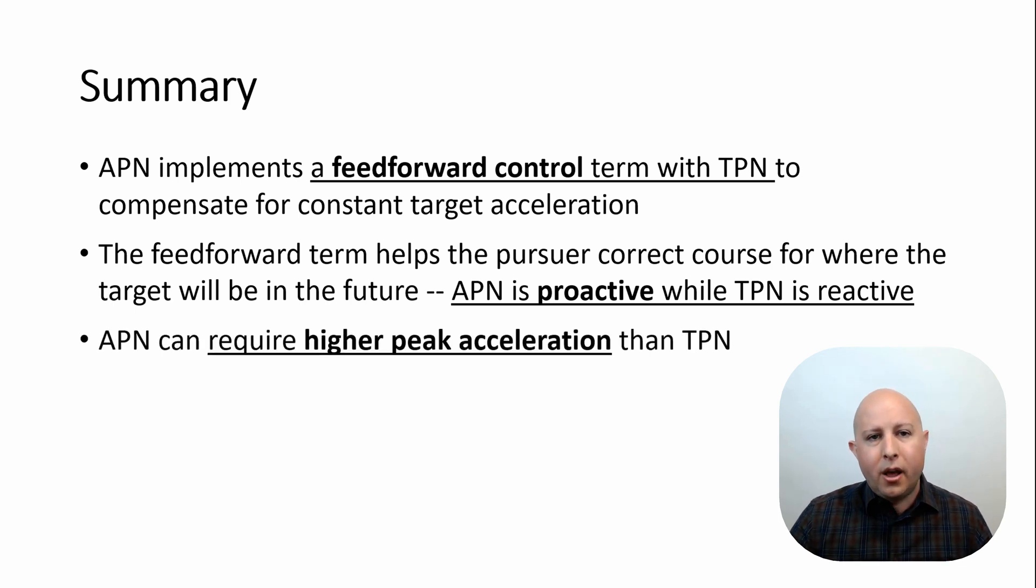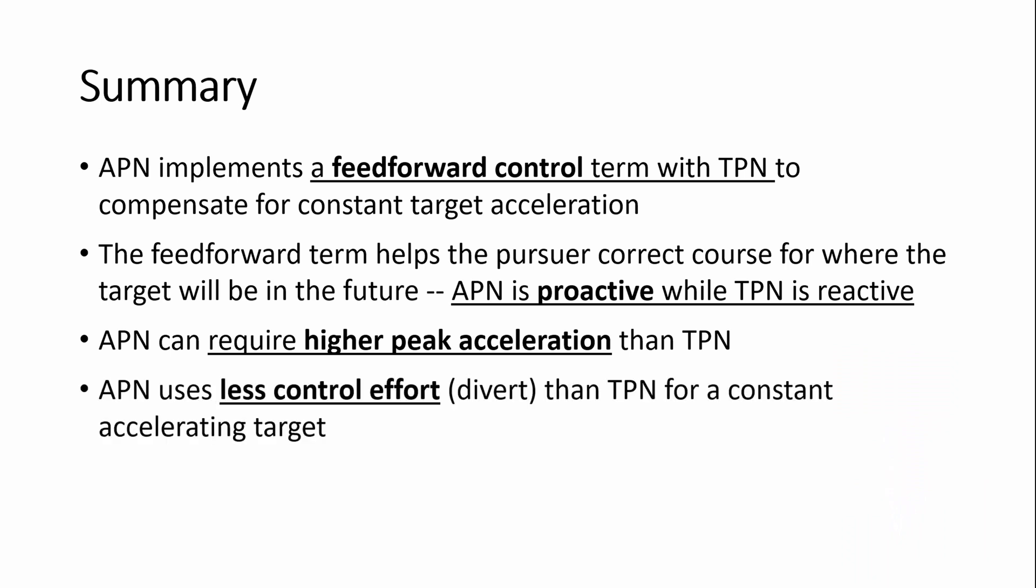We saw that instantaneously, and specifically very early on in the engagement, augmented proportional navigation had higher acceleration requirements than true pronav. But those higher acceleration requirements were capitalizing on our knowledge of what the target was going to do. And then later on in the engagement, the acceleration requirement was less overall.